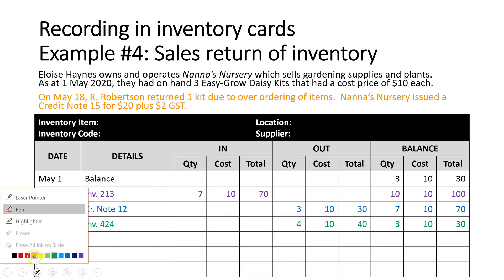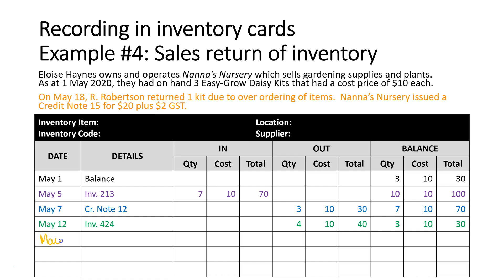Transaction four: on May 18, R. Robertson returned one kit due to over-ordering. Nana's Nursery issued Credit Note 15 for $20 plus $2 GST. This is a sales return related to the May 12 sale. Because the item is coming back into our business, it goes in the In column, and we record it at cost price — $10. We update the balance to four items in inventory.